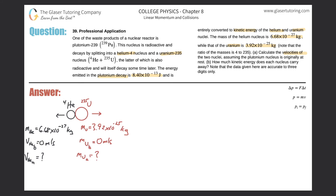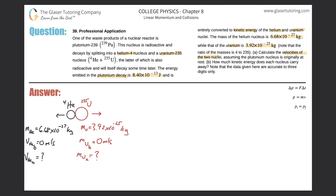Letter A: calculate the velocities of the two nuclei, assuming the plutonium nucleus is originally at rest. Here I drew the helium nucleus and the uranium nucleus. This whole unit before the decay happens is a plutonium atom. So this is basically held together and when it's held together, it's called plutonium. After the plutonium decays, eventually these two nuclei will be produced. I chose the helium to be propelled to the left and uranium to the right.